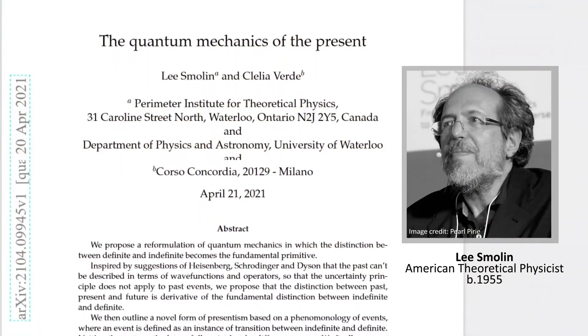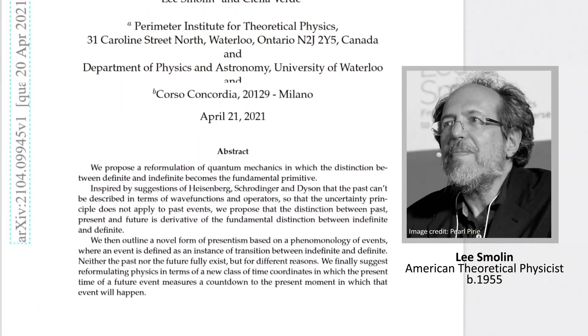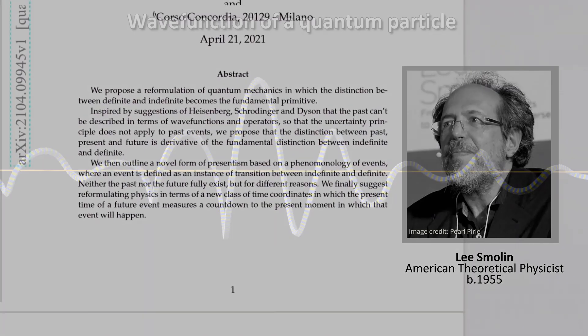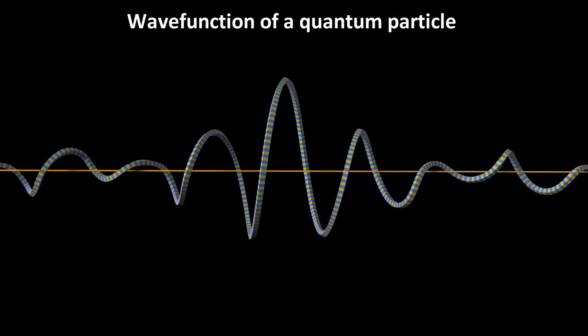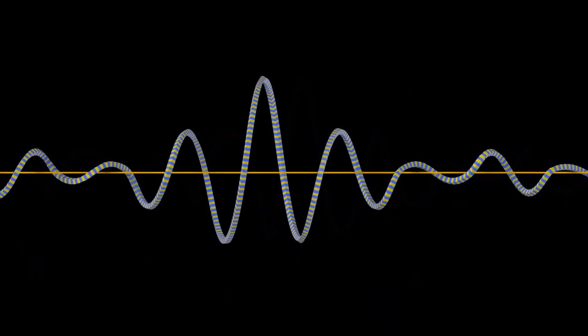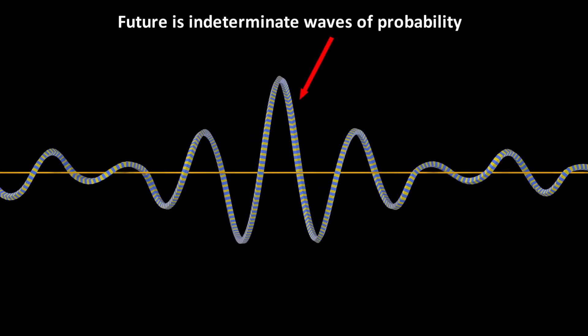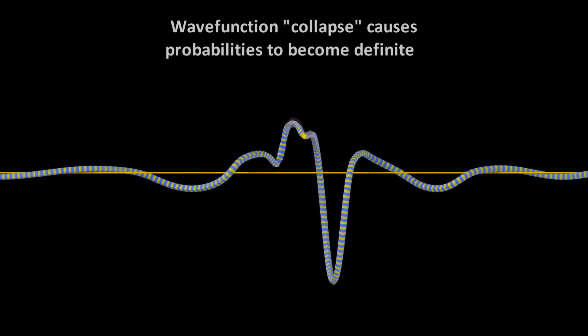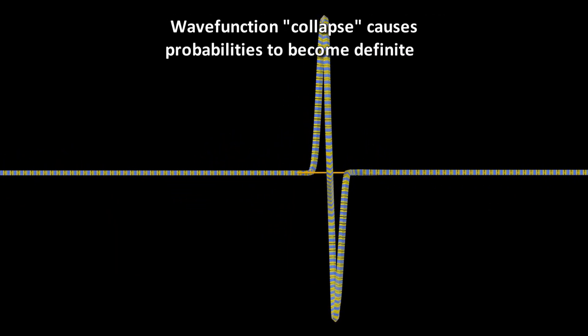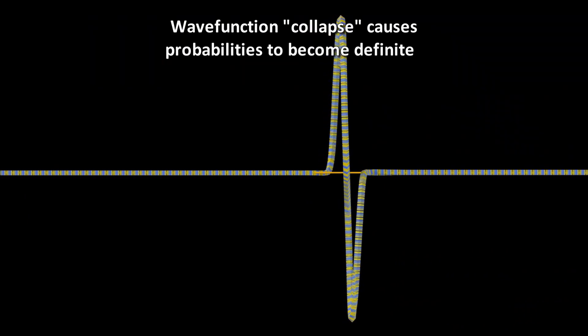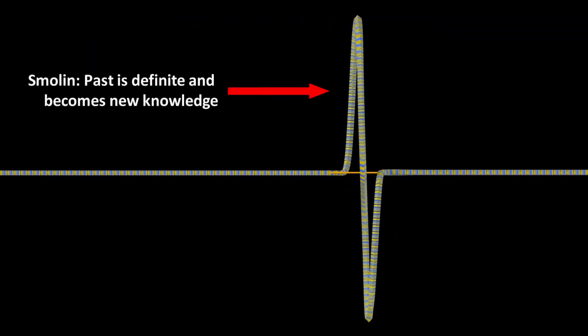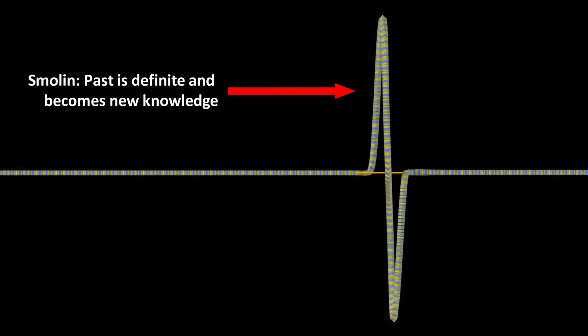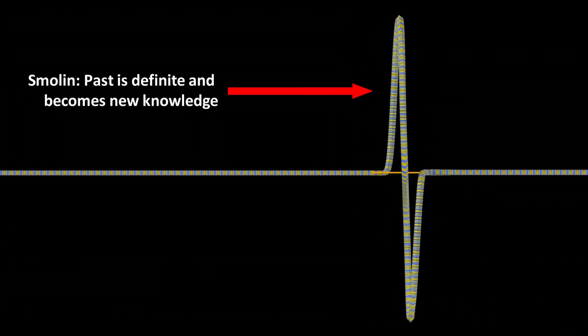Physicist Lee Smolin suggests in a 2021 paper that what distinguishes the past from the present is a kind of knowledge that is gained once indeterminate quantum events consisting of only probabilities in the present become a classical definite past. According to Smolin, the past is completely classical. They are no longer probabilities. They are definite. They have already happened. They cannot unhappen.